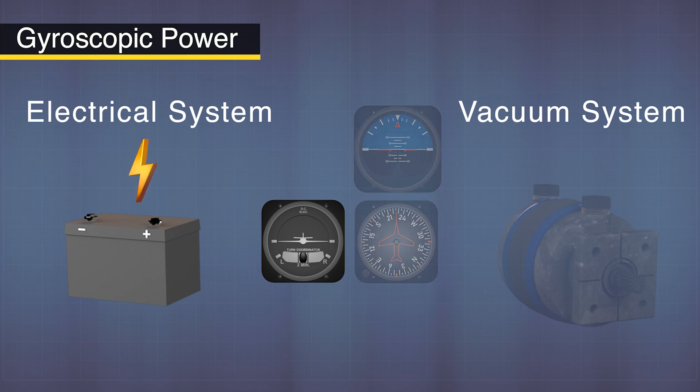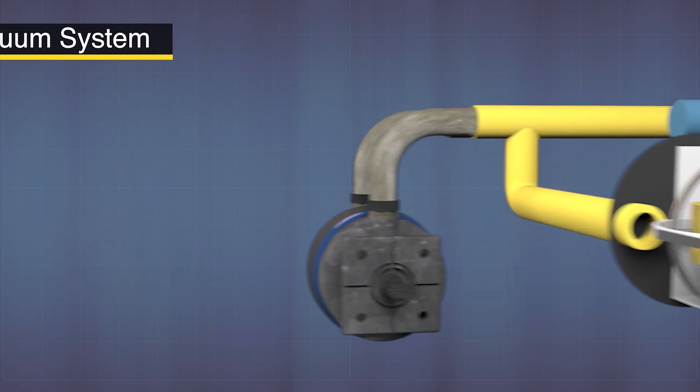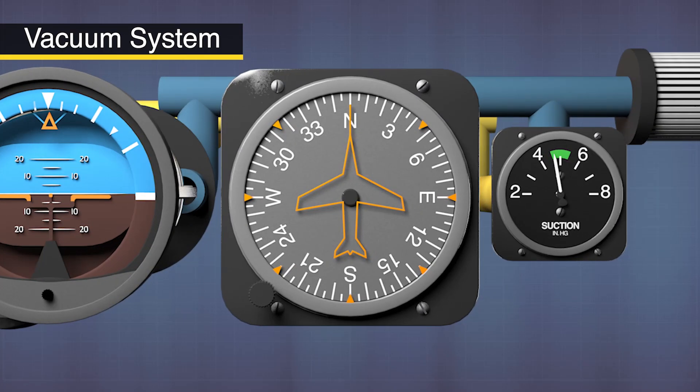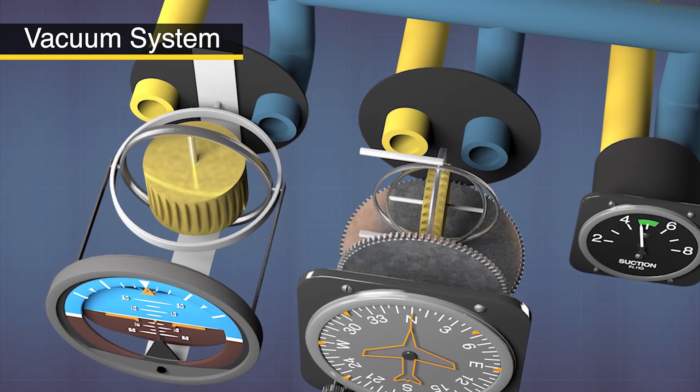The vacuum system powers two critical instruments: the attitude indicator and the heading indicator. These instruments are powered by air being pulled through them, hence the term vacuum.